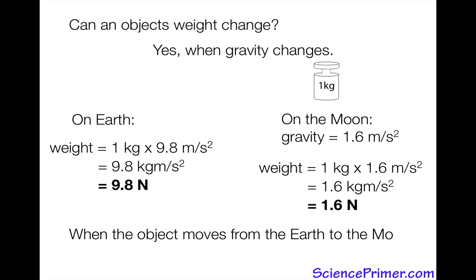So when an object moves from, say, the Earth to the moon, its weight will change because gravity changes. Its mass remains constant.